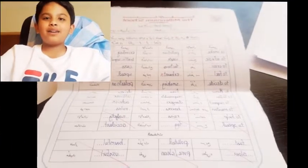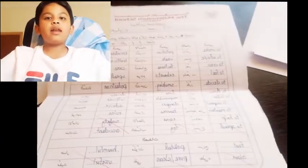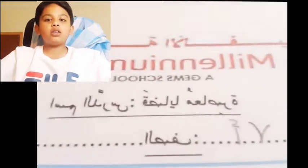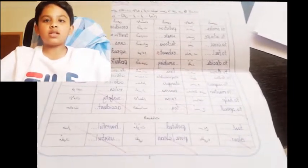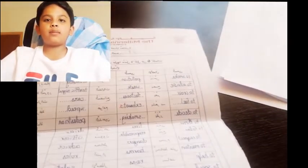Assalamu alaikum, hi everyone. Al an ana abda'a al dars qadaya muassirah. So today I'll be starting the lesson Contemporary Issues. This is the second lesson for the annual examination for Arabic in grade 7 at the millennium school Dubai.